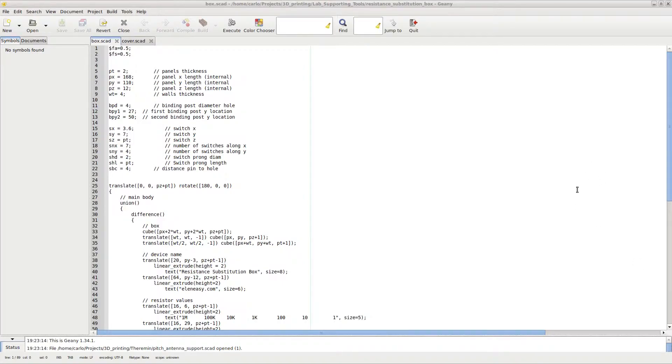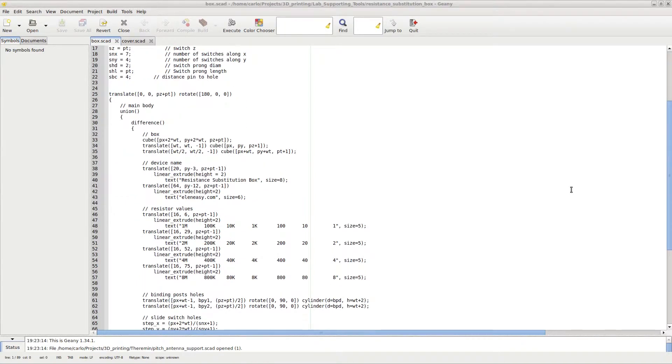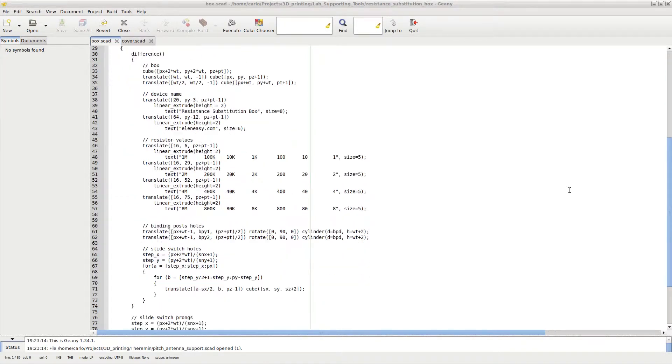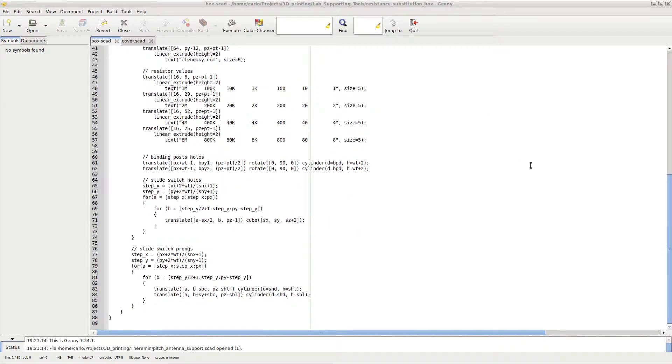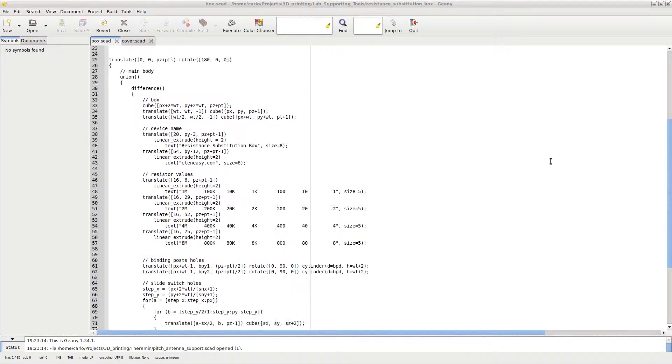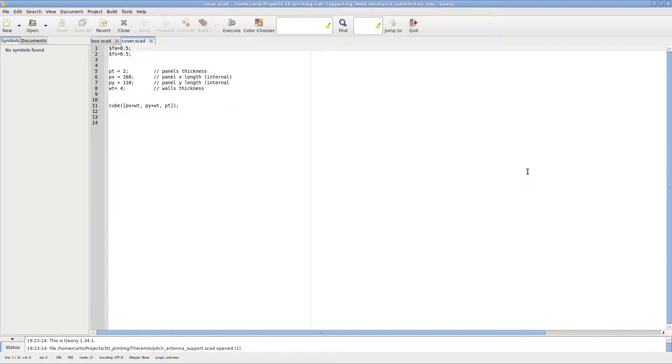Here is the OpenSCAD code I used to 3D print the container itself. There are actually two parts. The first is the main part of the box with the front panel, that carries embedded into it all resistance values assigned to each switch. The second part is the cover for the box, which will be sealed to the back of the main box to close it permanently.